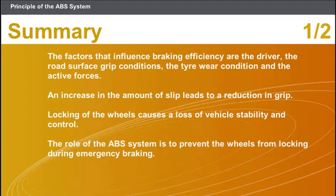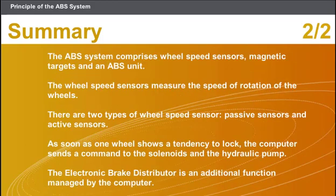In this section we covered the following points. The factors that influence braking efficiency are the driver, the road surface grip conditions, the tyre wear condition, and the active forces. An increase in the amount of slip leads to a reduction in grip. Locking of the wheels causes a loss of vehicle stability and control. The role of the ABS system is to prevent the wheels from locking during emergency braking. The ABS system comprises wheel speed sensors, magnetic targets, and an ABS unit. There are two types of wheel speed sensor: passive sensors and active sensors. As soon as one wheel shows a tendency to lock, the computer sends a command to the solenoids and the hydraulic pump. The electronic brake distributor is an additional function managed by the computer.